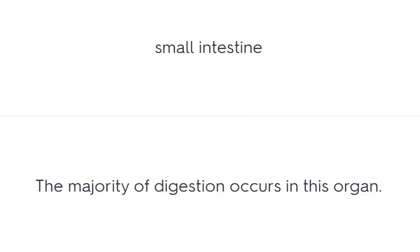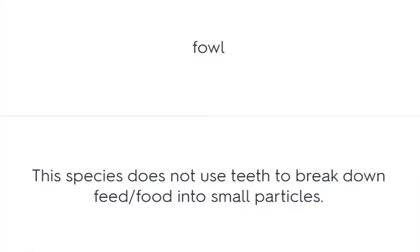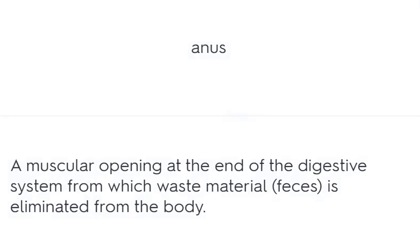Small intestine – the majority of digestion occurs in this organ. Fowl – this species does not use teeth to break down feed into small particles. Anus – a muscular opening at the end of the digestive system from which waste material is eliminated from the body.